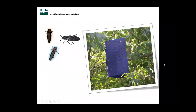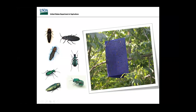Our trappers must also be able to identify EAB and distinguish it from lookalikes found on traps. These include two-line chestnut borer, bronze birch borer, and click beetles — often mistaken for EAB because of their shape. There's also the six-spotted tiger beetle, some ground beetles, and a chrysidid wasp — often mistaken for EAB because of their bright green color.